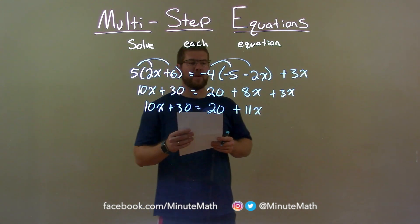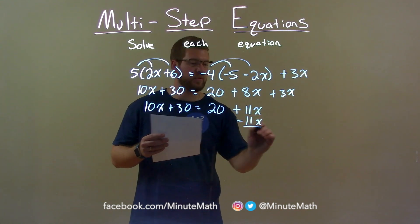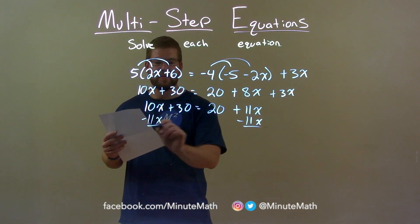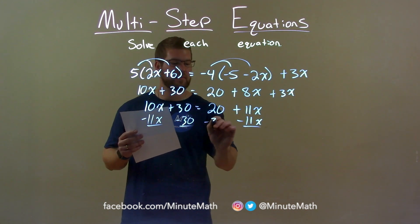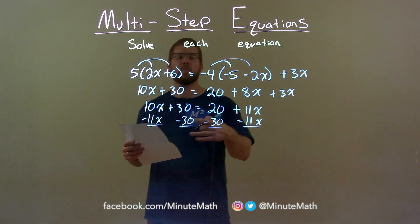Now let's get our variables together. We subtract 11x to both sides and let's get our numbers together. We subtract 30 to both sides. So the variables to the left, numbers to the right.